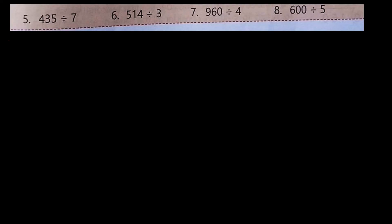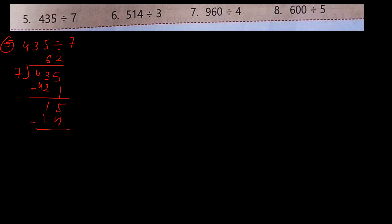Number 5: 435 divided by 7. Since 4 is smaller than 7, we take two numbers: 43. 7×6=42, 43 minus 42 is 1. Bring down 5 making 15. 7×2=14, 15 minus 14 is 1. So Q is equal to 62, R is equal to 1.